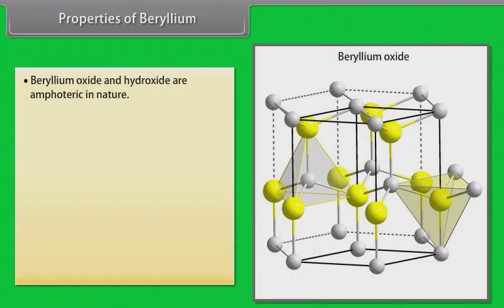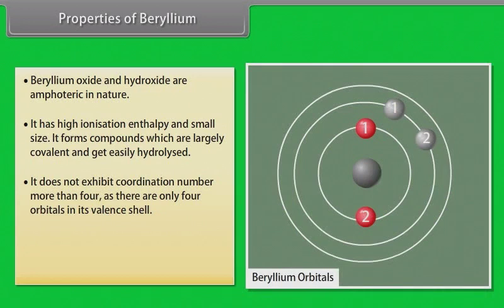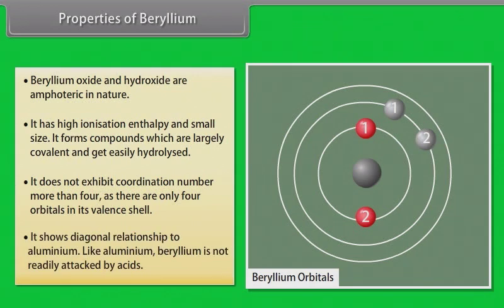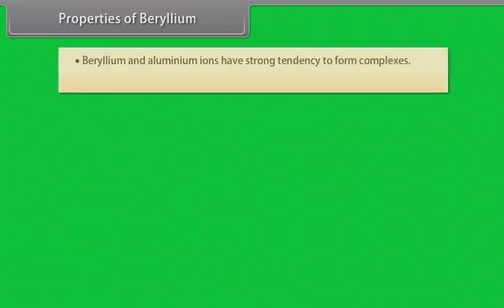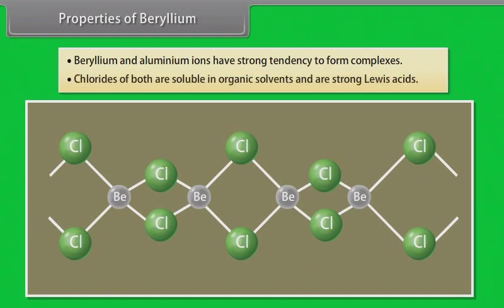Properties of beryllium. Beryllium oxide and hydroxide are amphoteric in nature. It has high ionization enthalpy and small size, and forms compounds which are largely covalent and get easily hydrolyzed. It does not exhibit coordination number more than 4, as there are only 4 orbitals in its valence shell. It shows a diagonal relationship to aluminium. Like aluminium, beryllium is not readily attacked by acids. Beryllium and aluminium ions have a strong tendency to form complexes. Chlorides of both are soluble in organic solvents and are strong Lewis acids.